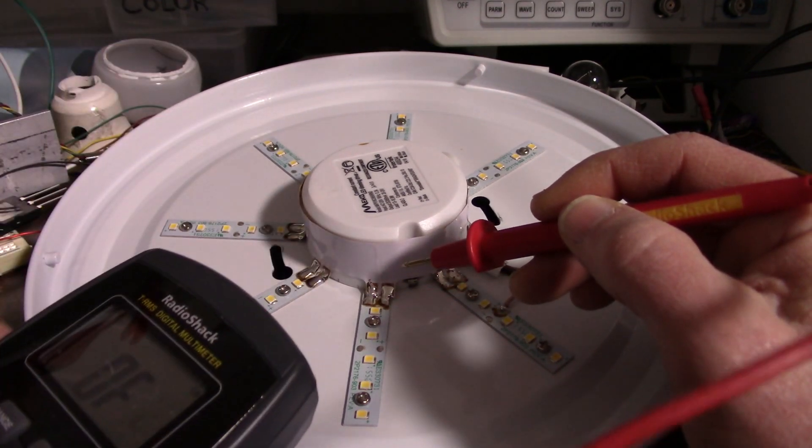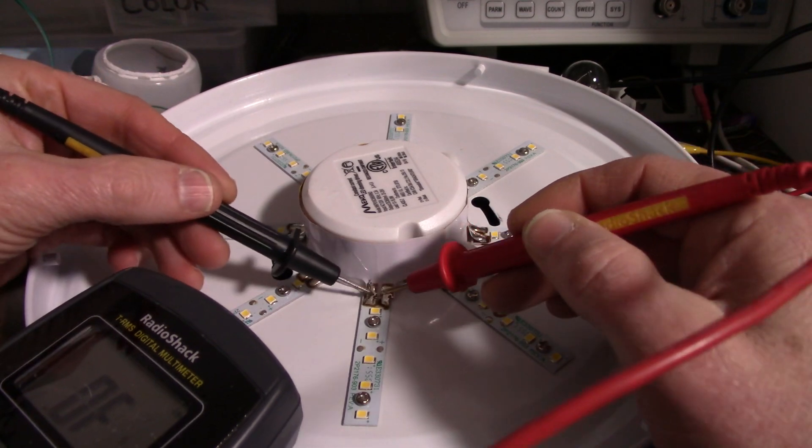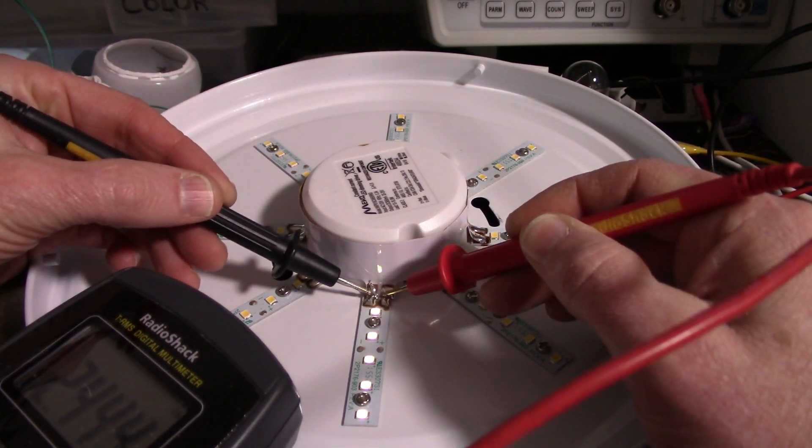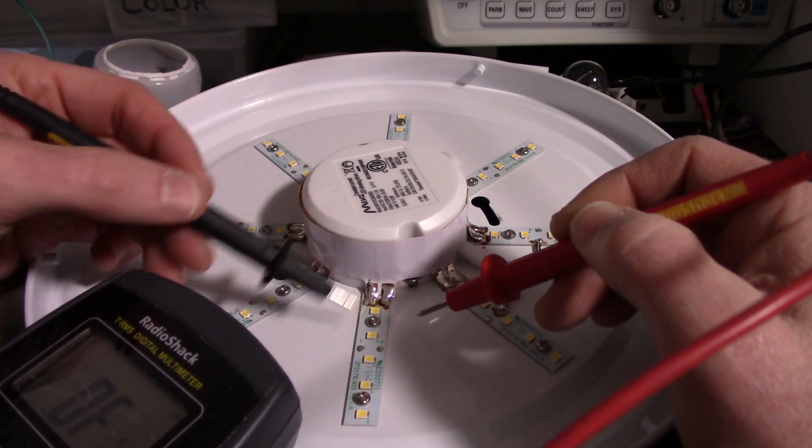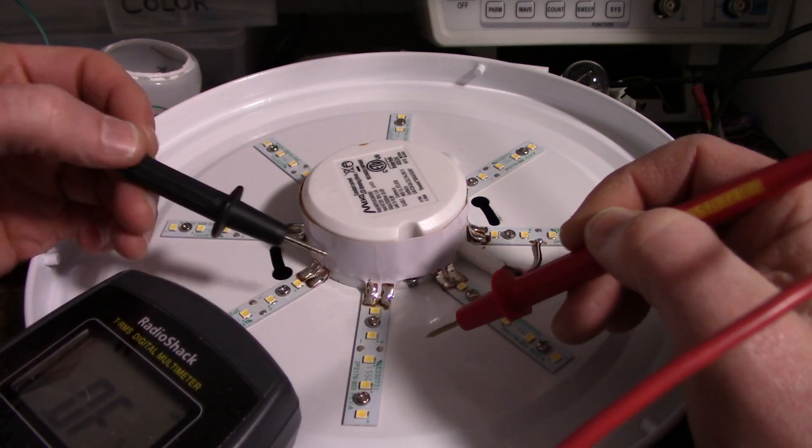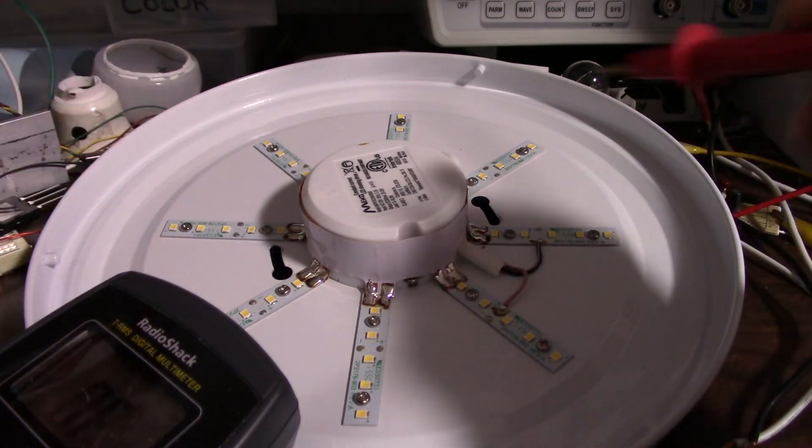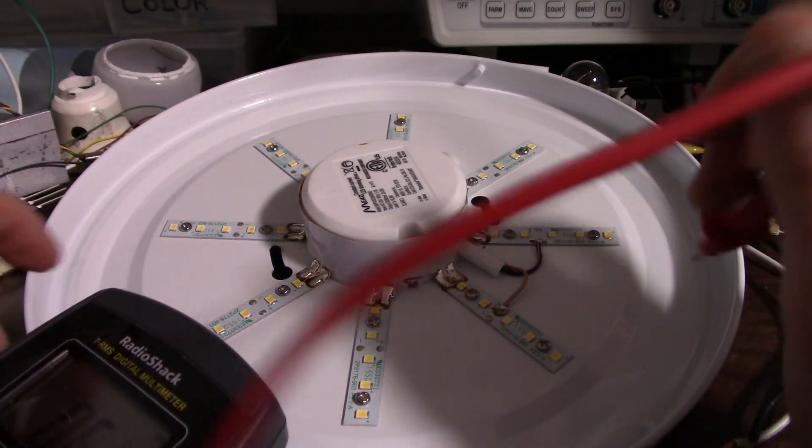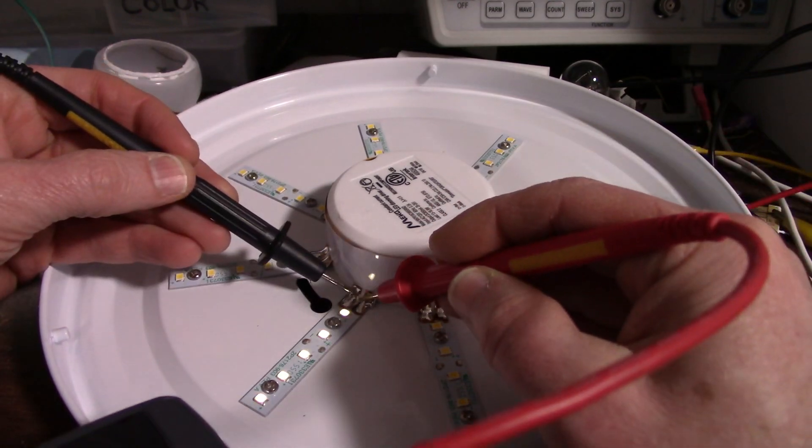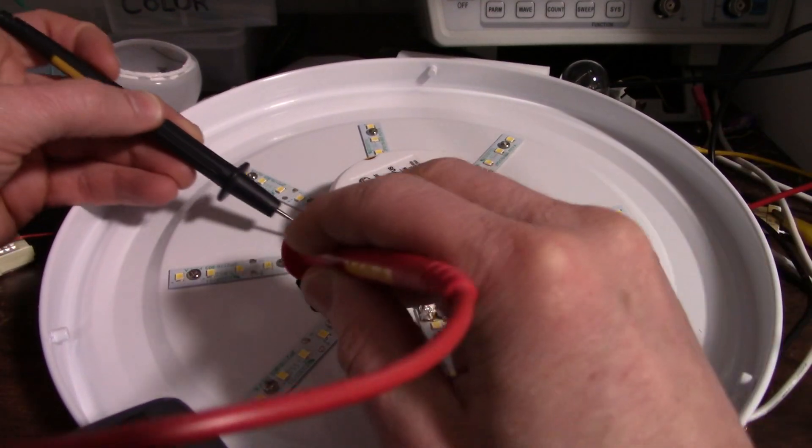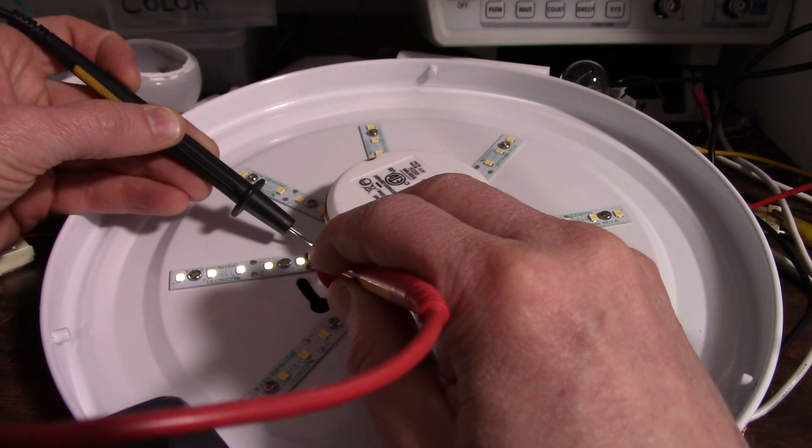And you probably can't read the screen here, but it says 2.4 volts. So yeah, normal operating voltage or forward voltage of these LEDs would be around 3 volts, and they just start lighting a little bit at lower voltage. So I'll go around and check all of these LEDs to make sure they do indeed all work.